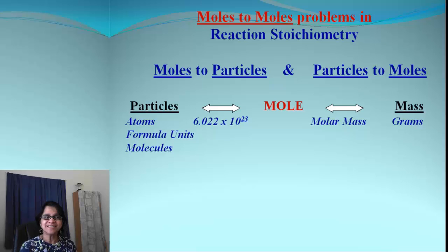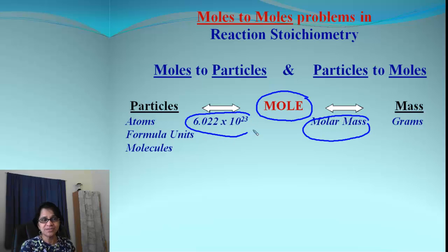Alright, this is a simple roadmap which you already talked about in early unit, and that is a roadmap which always goes through mole. And if you can go from moles to particles or moles to mass, we can use molar mass or we can use the magic number which is Avogadro's number.